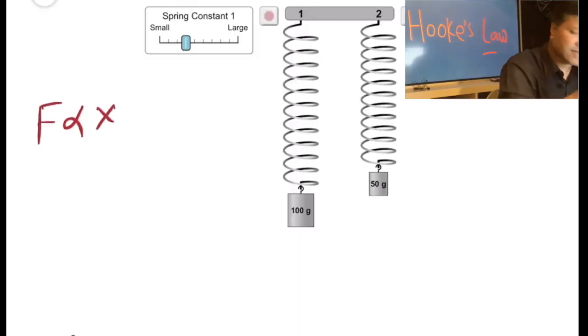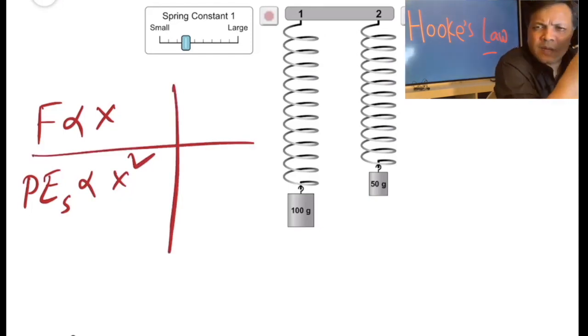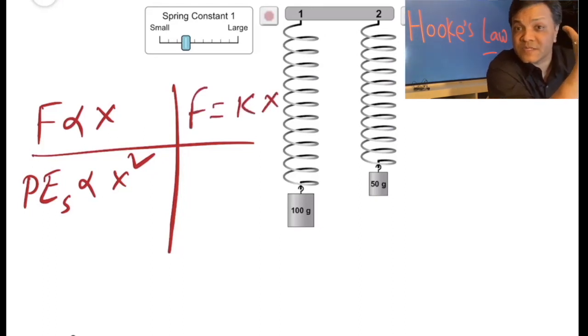X is the displacement of the spring. Then he wanted to understand how much work he has to do to stretch it, and he realized that the potential energy stored in the spring is proportional to X squared, which is also the square of the displacement. After a series of experiments, he ended up realizing F is actually equal to KX.